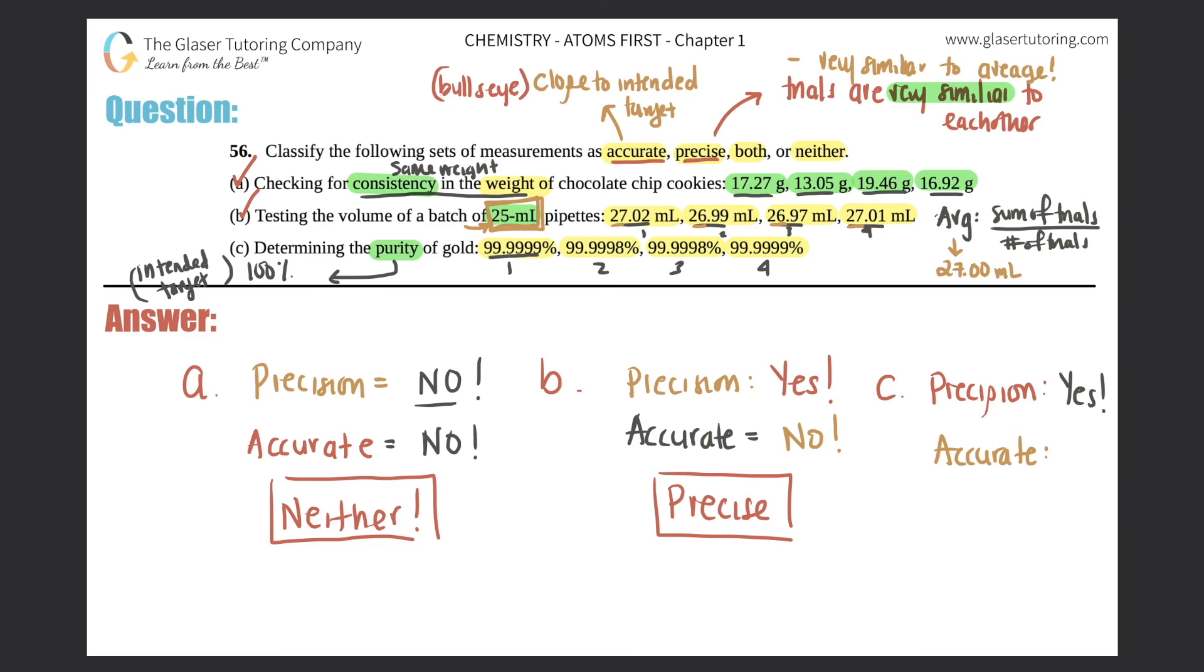Now look at all these samples - super close to your intended target. They're all 99 and then more nines after it. So super accurate, yes. So this one would be both. Both accurate and both - they both have accuracy and they both have precision.